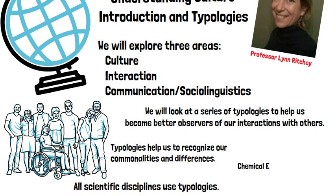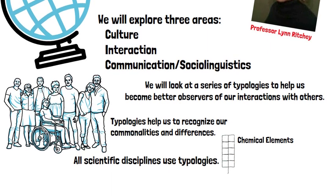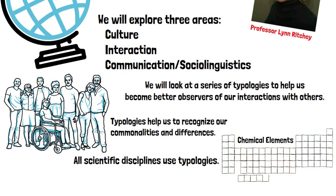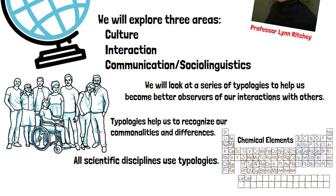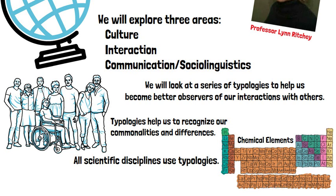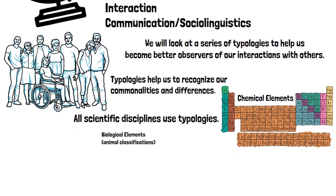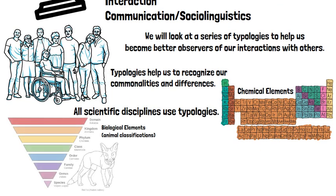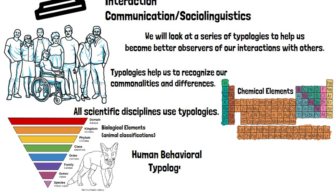Let's look at typologies a little bit deeper. When we think about typologies, we can recognize that all sciences use typologies and taxonomies to observe the behavior of the subject matter that they are studying. When we use these typologies, we can be more objective in our observations. We can also replicate observations from other scientists, and we can observe the differences and similarities of properties of various elements — like chemical elements, biological differences, human behavior differences. Every science uses some type of typology to classify elements.